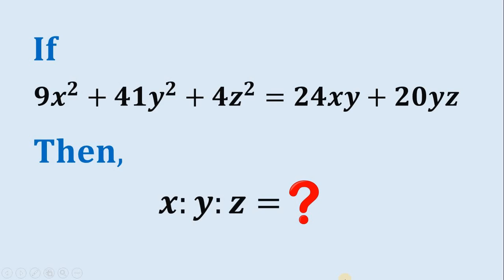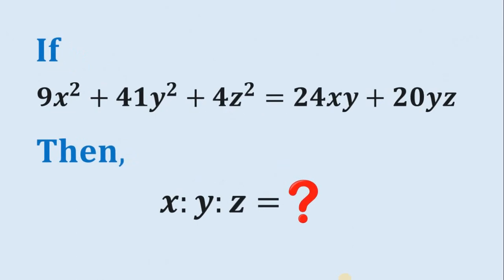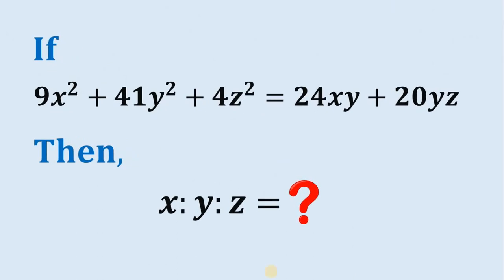Good day everyone, here's our math challenge for today. If 9x squared plus 41y squared plus 4z squared equals 24xy plus 20yz, then what is the value of x is to y is to z?